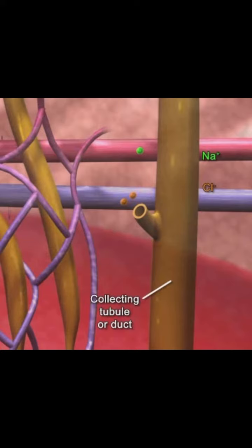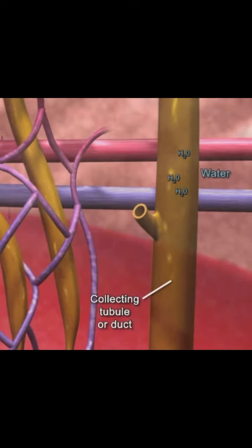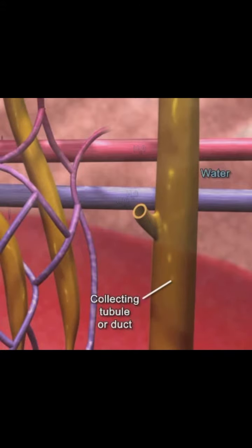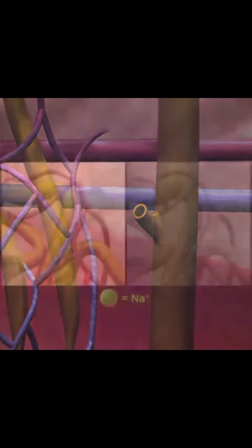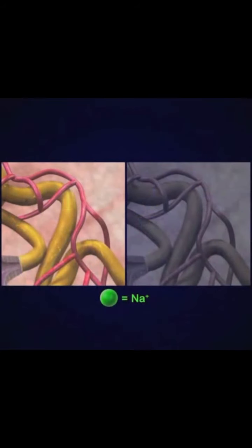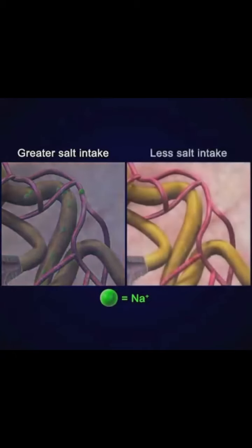Absorption occurs through active or passive transport. Sodium ions and other ions are only partially reabsorbed from renal tubules. Sodium ions are actively transported back into the blood from the tubules. The amount of sodium reabsorbed varies depending on salt intake. The greater the salt intake, the less the amount of sodium reabsorption. The less the salt intake, the greater the amount of sodium reabsorption, and the less sodium secreted in the urine.